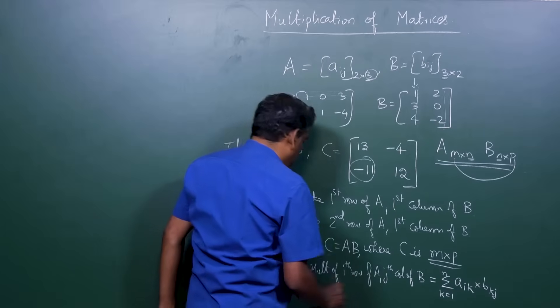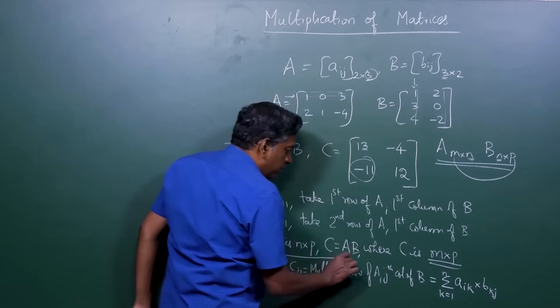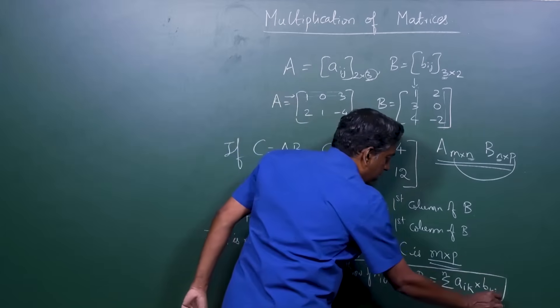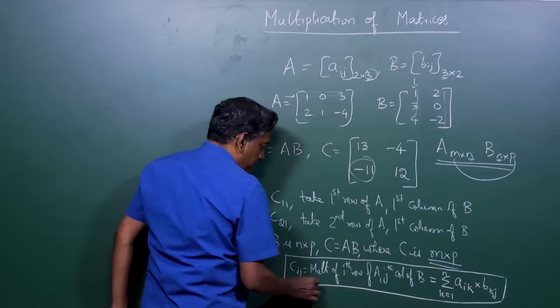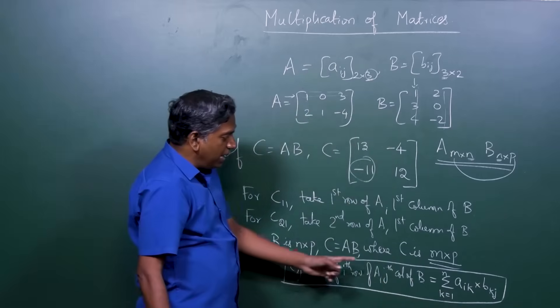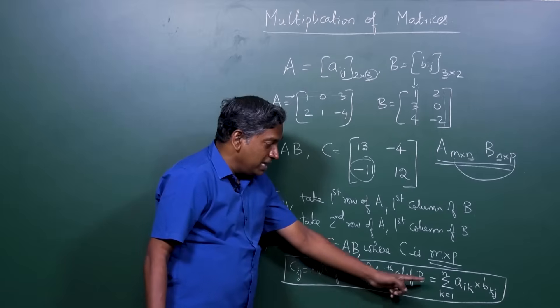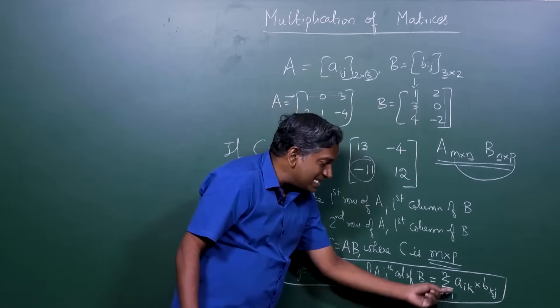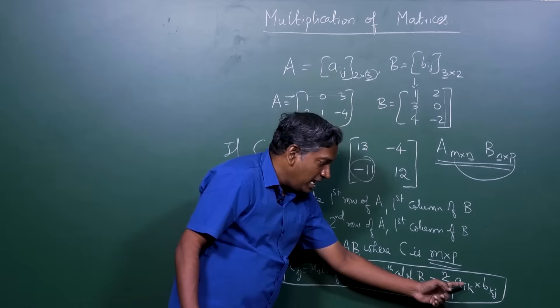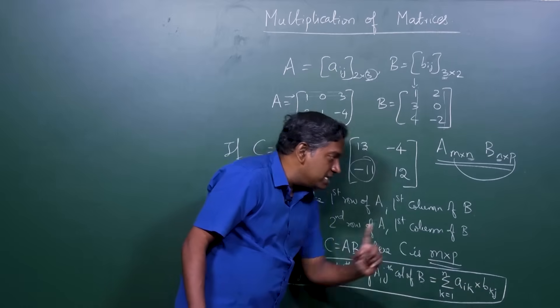So this is very, very important. The fact that when you multiply the i-th row by the j-th column, it's a sigma. How many products? N products. Aik times Bkj.